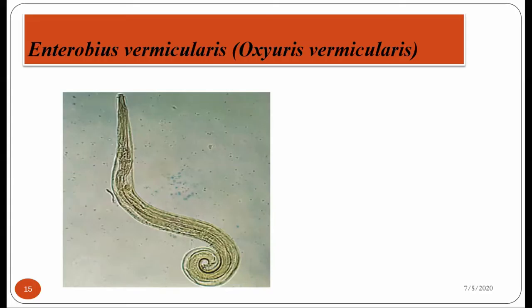This is the picture of the adult male worm of Enterobius vermicularis. This is the anterior region. This is the posterior region where there is a tail that is coiled ventrally. At the anterior portion of these worms, whether male or female, there is a presence of cervical alae, which is the typical characteristic feature of Enterobius vermicularis. Cervical alae are found in the anterior portion of both male and female worms.